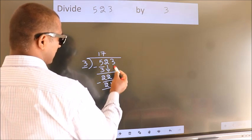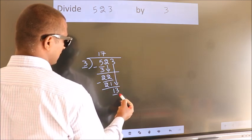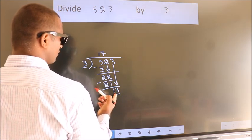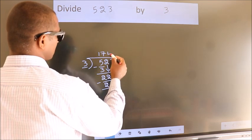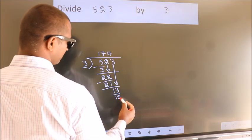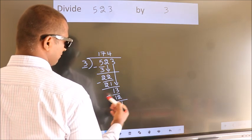After this, bring down the beside number. So, 3 down. So, 13. A number close to 13 in the 3 table is 3 4s 12. Now, we subtract. We get 1.